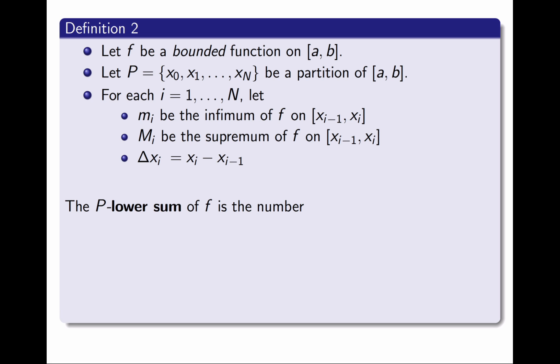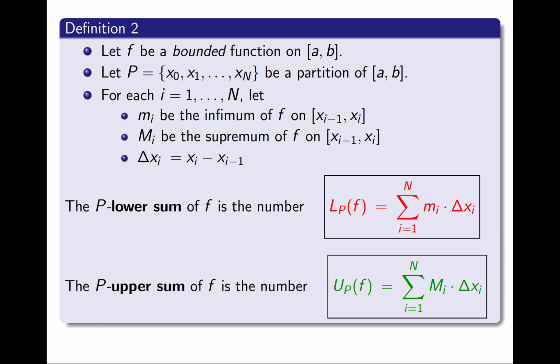With this notation, I define the P lower sum of f as this sum in the red box, and the P upper sum of f as this sum in the green box. These are just numbers, but it is important to remember their geometric meaning. They represent the under and over estimates for the area that comes from the red rectangles and the green rectangles.